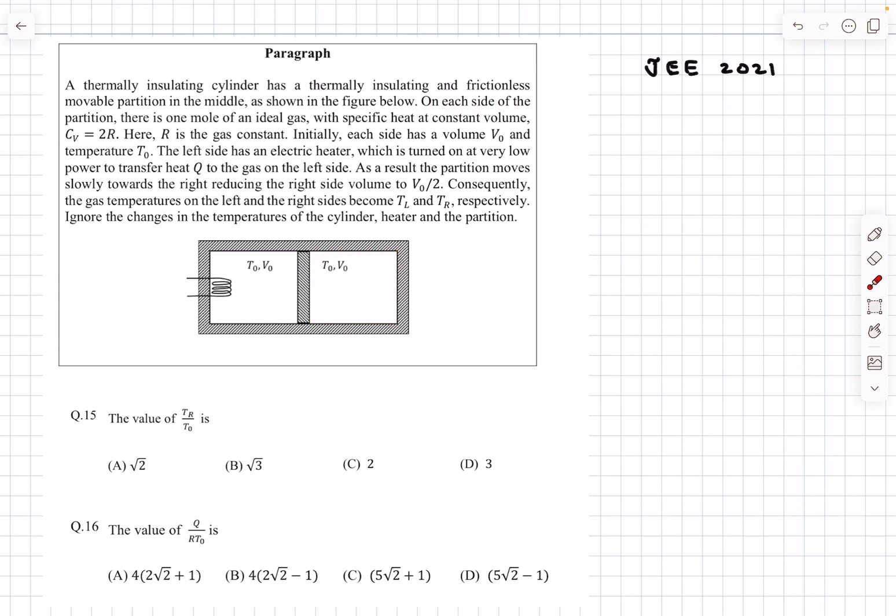On each side of the partition there is one mole of an ideal gas with constant volume specific heat CV = 2R. Initially each side has a volume of V0 and temperature T0.